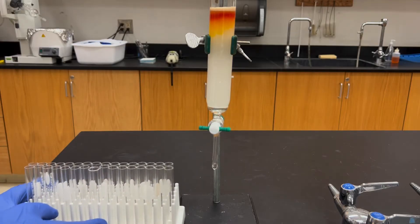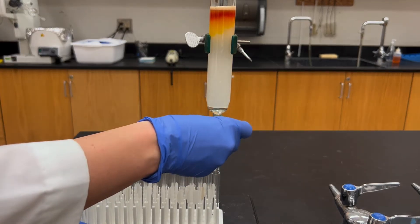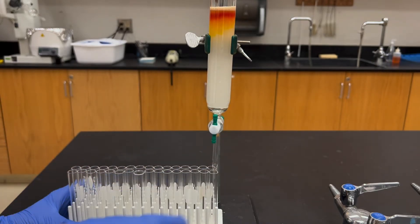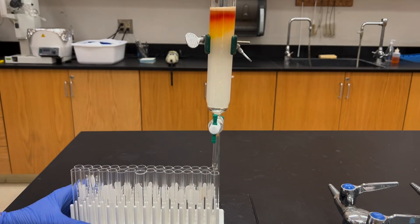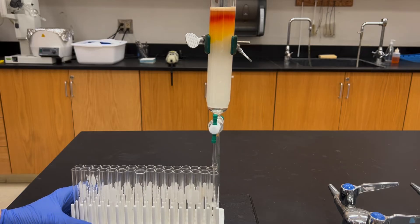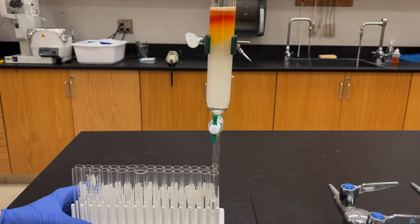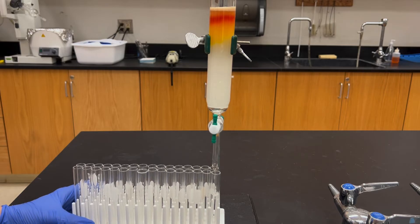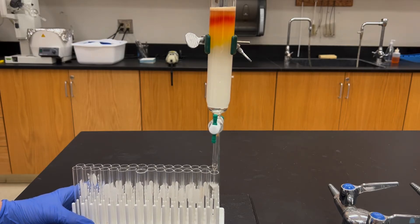After all that prep work it's finally time to elute the column. So open up the stopcock and let the liquid drain out into a test tube. When the test tube fills, move it over and collect the liquid into a different test tube. That's called collecting fractions and the goal is to collect different compounds in different test tubes, thereby separating them.